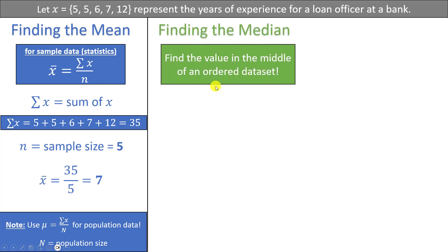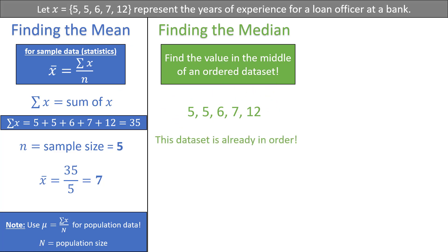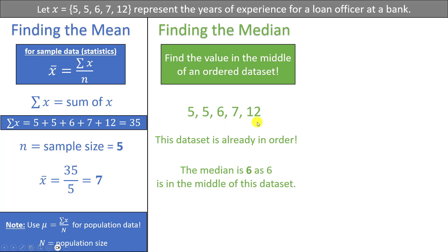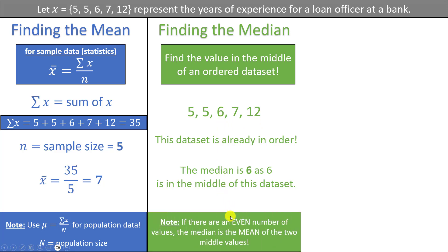The median is just the value that is in the middle of an ordered data set. Taking the same data set: 5, 5, 6, 7, and 12 — the data set is already in order, so we are ready to find the median. The median in this case is 6, because 6 is the number directly in the middle of this ordered data set. We had an odd number of values, meaning there is only one single value in the middle. But if we had an even number of values, then there would be two values in the middle, and the median would be the mean of those two middle values.